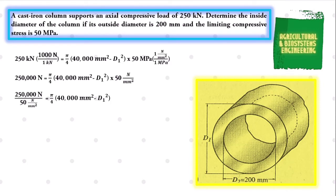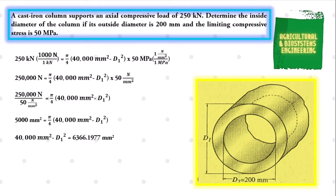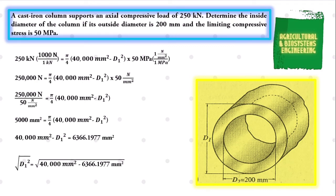We divide both sides by the stress of 50 N per square millimeter to obtain 5,000 square millimeters equals pi over 4 multiplied by 40,000 square millimeters minus D1 squared. Dividing both sides by pi over 4 and transposing values, we obtain: 40,000 square millimeters minus D1 squared equals 6,366.1977 square millimeters. We transpose values and take the square root: D1 equals the square root of 40,000 minus 6,366.1977 square millimeters.